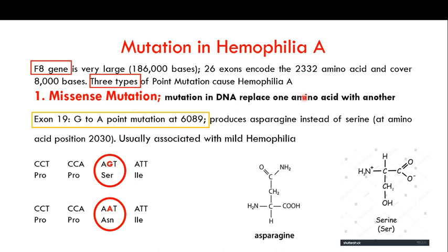In a missense mutation, one amino acid is replaced with another amino acid due to a mutation in the DNA. In the F8 gene, in exon number 19, there is a G to A point mutation at nucleotide position 6089. This single base change is what we call a point mutation.